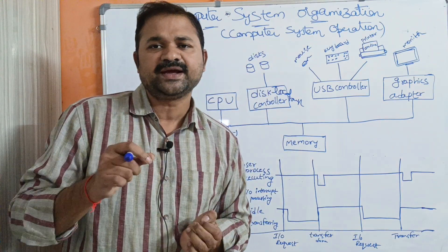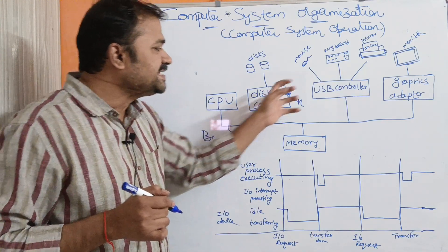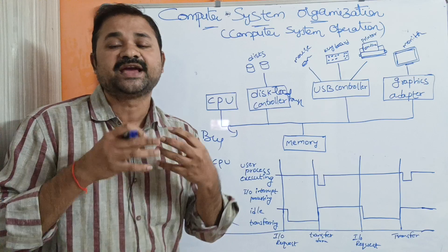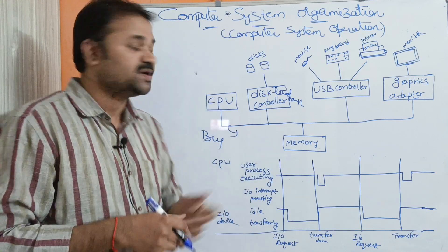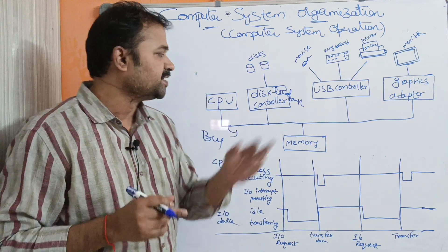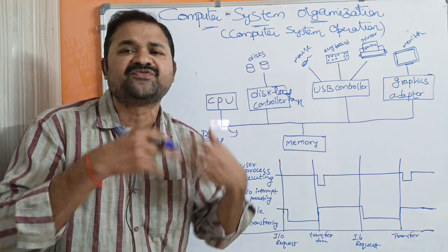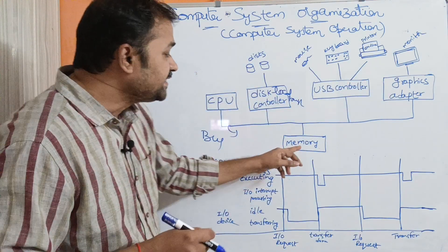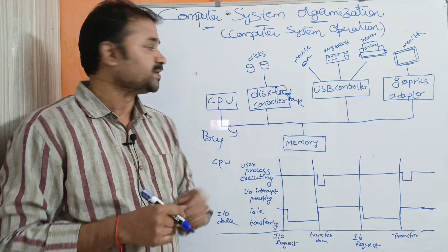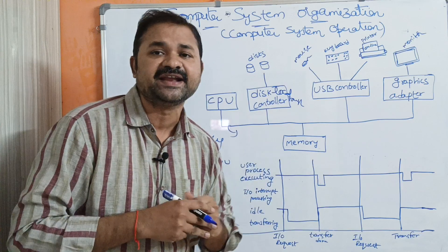The CPU and device controllers can work concurrently — the CPU can do its own task while device controllers do their own tasks. Here, memory refers to main memory, whereas the disk is secondary memory, that is the hard disk.